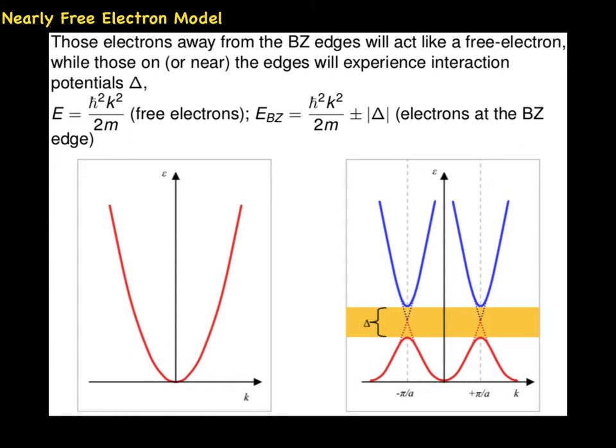The corresponding band structure is shown as the right side figure. The electrons near the Brillouin zone edges are nearly free electrons but with energy gap at k equals plus minus π over a.